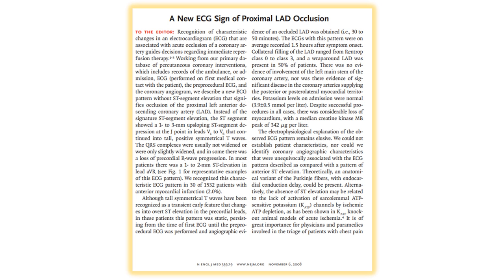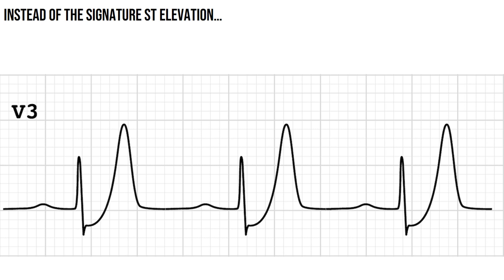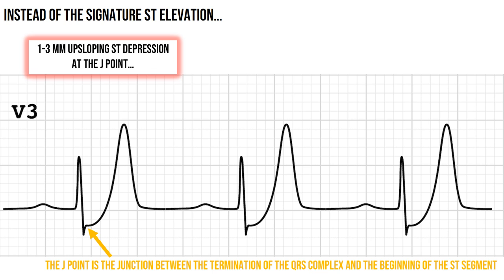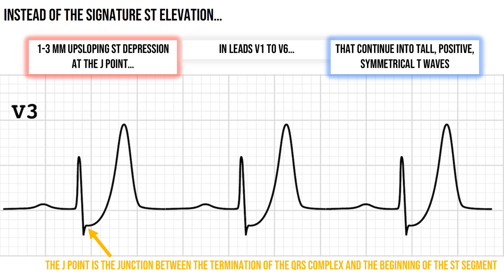Quoted from a New England Journal of Medicine article by DeWinter et al. in 2008, in which interestingly one of the et als was Wellens: instead of the signature ST elevation, the ST segment showed a 1-3mm upsloping ST depression at the J-point — the junction between the termination of the QRS complex and the beginning of the ST segment — in leads V1 to V6, that continue into tall, positive,